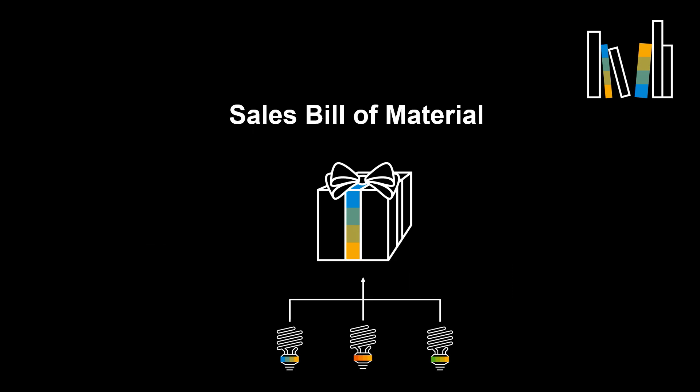A sales bill of material is a list of products and quantities included in the product bundle. A sales BOM may generate reservations for components in the bill of materials that are in stock, and purchase requisitions for components that are not in stock.